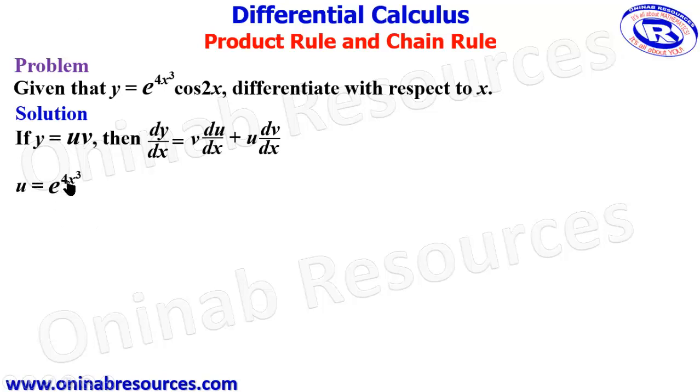We are going to take u in this case to be e power 4x³, then we differentiate u with respect to x. So du/dx will be, we are going to keep the function e raised to power 4x³, then we now differentiate 4x³ and multiply. So that's going to be times 12x². If you differentiate 4x³ it gives you 4 times 3 giving 12, then it reduces the power by 1 giving us 12x². This is giving us 12x² e raised to power 4x³.